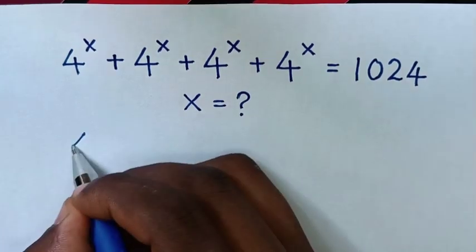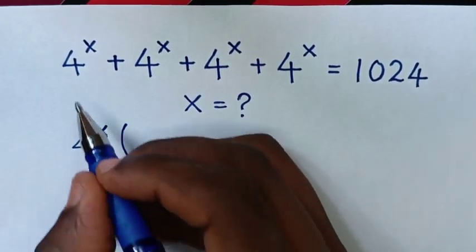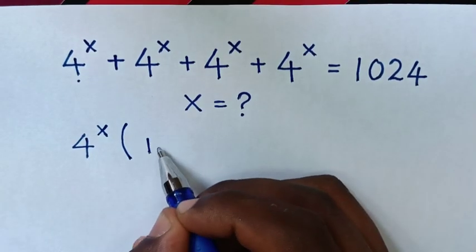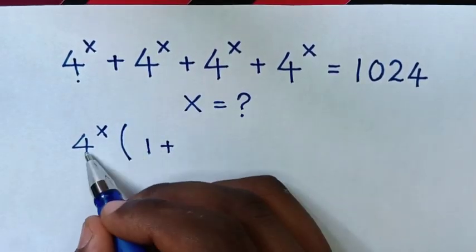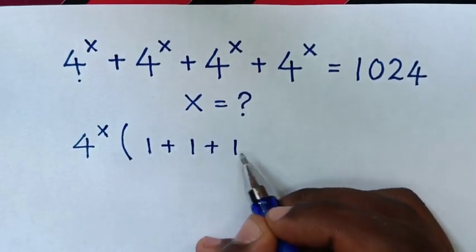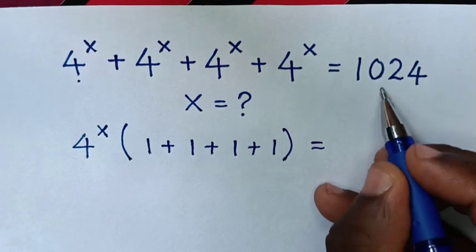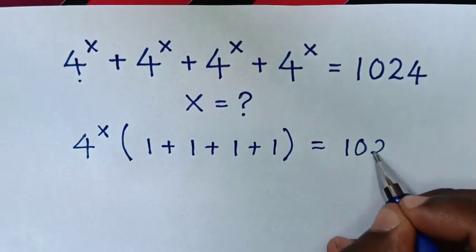So from this side, 4 power x is common. So we take 4 power x out of bracket. This divided by this is 1 plus this divided by this is 1 plus this divided by this is 1 plus this divided by this is 1 bracket is equal to 1024.